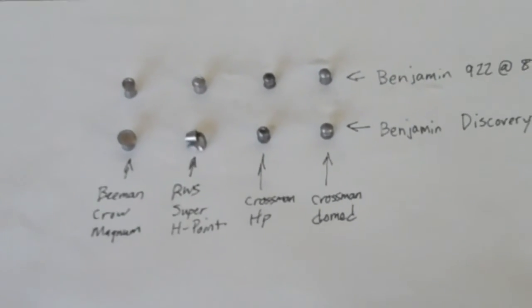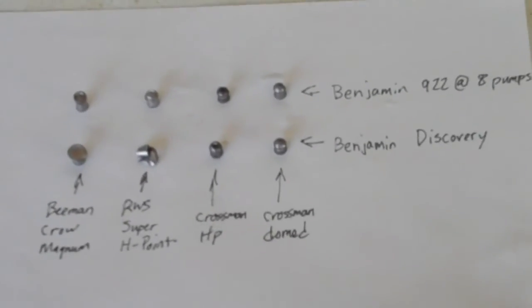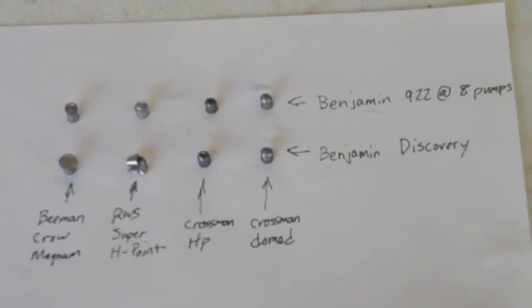The Crossman hollow point expanded very little in both rifles, as also did the Crossman domed .22 caliber.